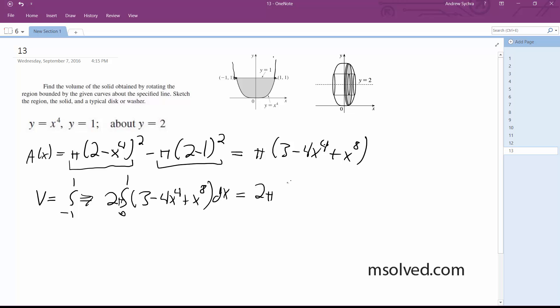We get 2 pi (3x minus 4/5 x to the 5th plus 1/9 x to the 9th) from 0 to 1. And we end up with 2 pi (3 minus 4/5 plus 1/9), simplify this, and we get 208 over 45 pi. That's it.